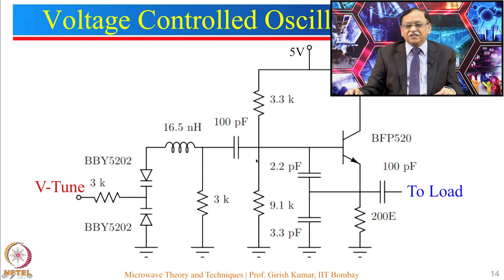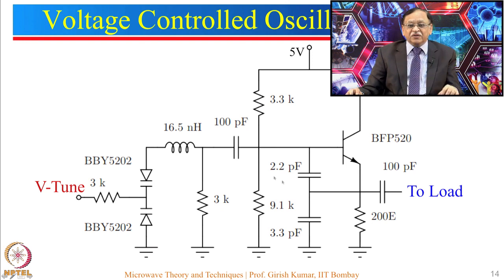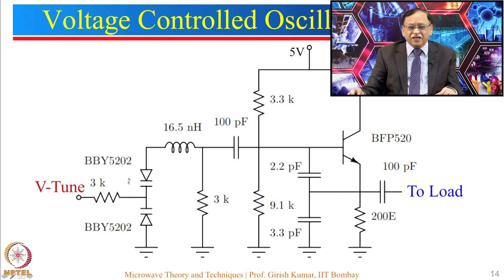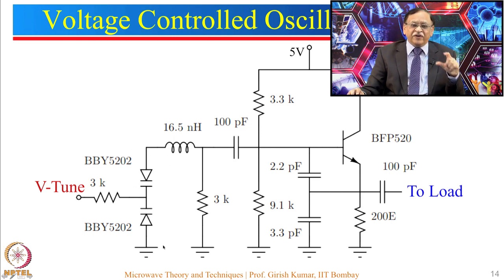Note that capacitors are used in the feedback path — not resistors. If you use resistors, it will never become an oscillator. This feedback ratio ensures that A·beta is greater than 1 to start the oscillation. On the other side of the circuit, we have an inductor and varactor diodes. Varactor diodes are used because as the tuning voltage changes, their effective capacitance changes, and by changing the effective capacitance we can change the resonance frequency of the oscillator.